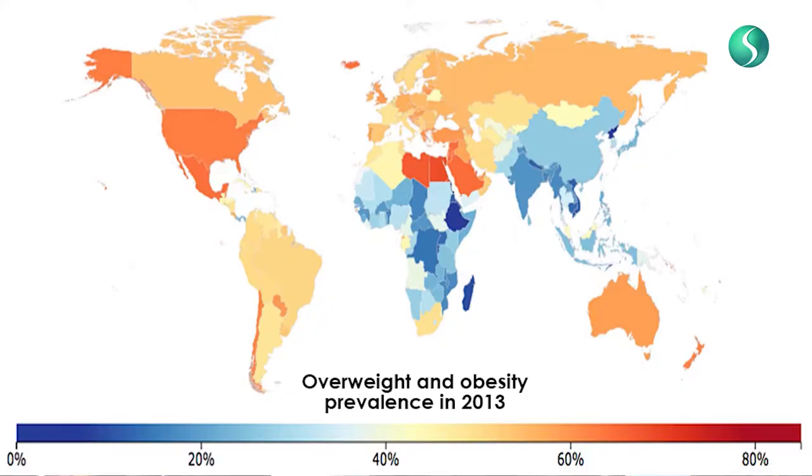The next slide shows the prevalence of obesity in different parts of the world. Quite surprisingly, the countries with the highest level of obesity are actually the Middle Eastern and Gulf countries. One might think it would be America, and America is not far behind, but it's the Gulf countries where obesity per head is the highest percentage. This is a big problem for Muslims and Muslim countries, and something we really need to be aware of and deal with.